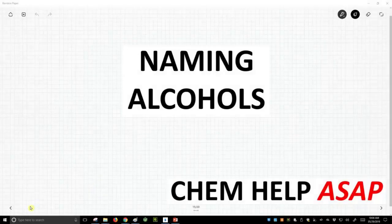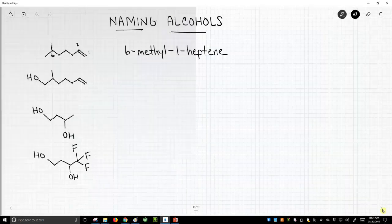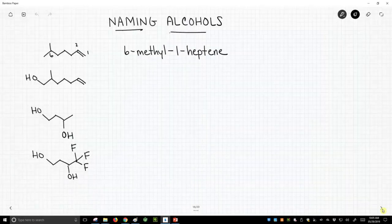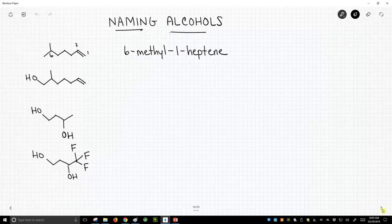Hello from Chem Help ASAP. Let's learn how to incorporate alcohols into our molecule names. So we have four molecules on this slide. I've named the first one. It's simply an alkene.